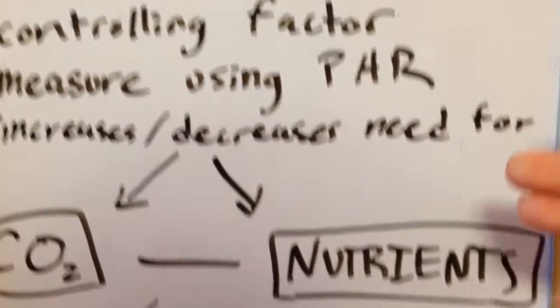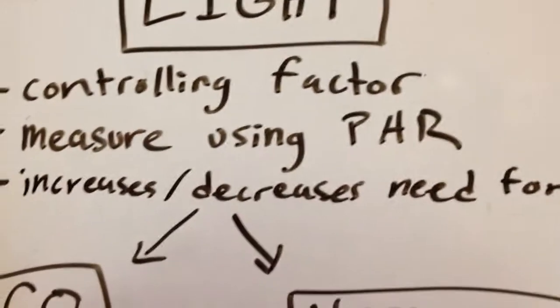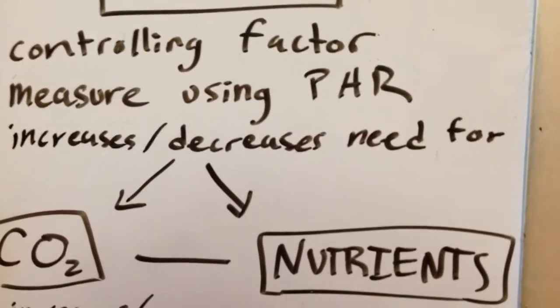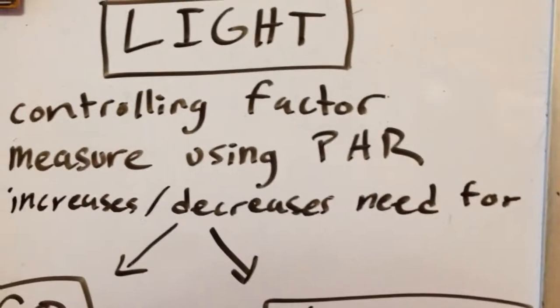I've made a visual representation of the three factors that go into growing plants in your tank. I made this because I think it's really important to have a good understanding of how these three things work together in order to have a successful tank.